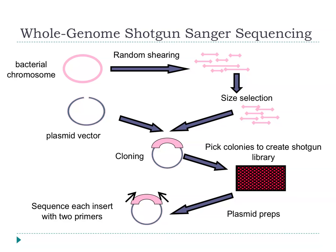Let's quickly remind you about whole genome shotgun sequencing. Basically, you shear the genome into lots of pieces, clone it into plasmids, and then sequence the inserts. That's how it used to be done in the old days — and by the old days, I mean five years ago.